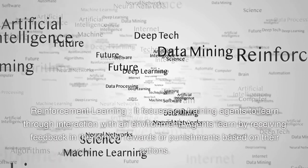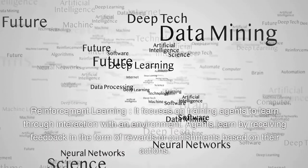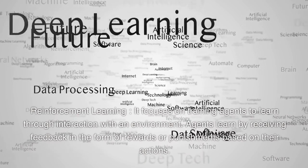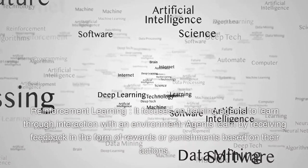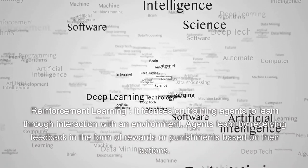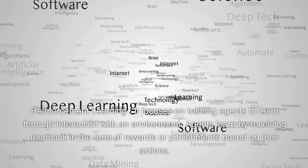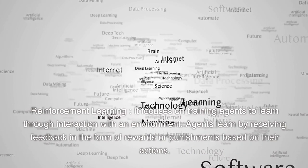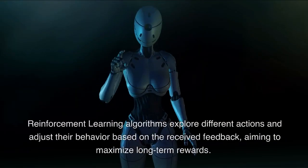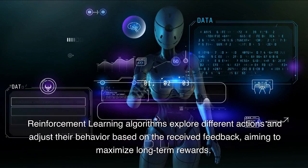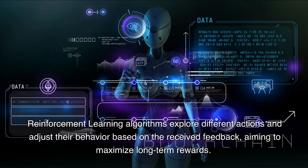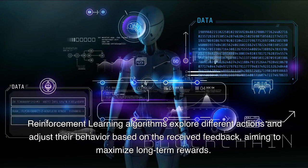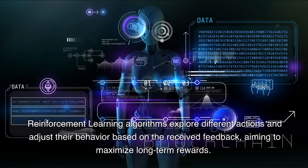Reinforcement learning focuses on training agents to learn through interaction with an environment. Agents learn by receiving feedback in the form of rewards or punishments based on their actions. Reinforcement learning algorithms explore different actions and adjust their behavior based on the received feedback, aiming to maximize long-term rewards.